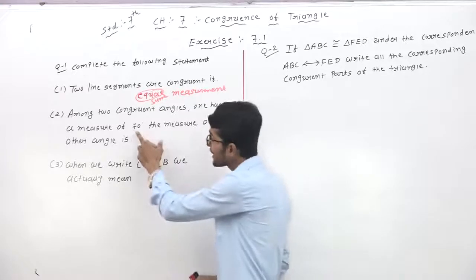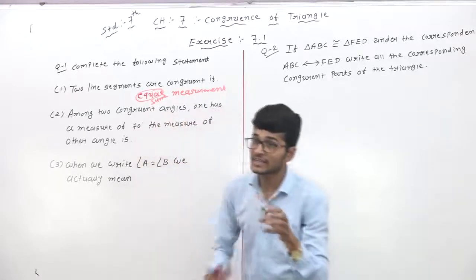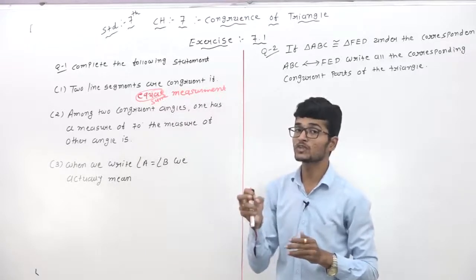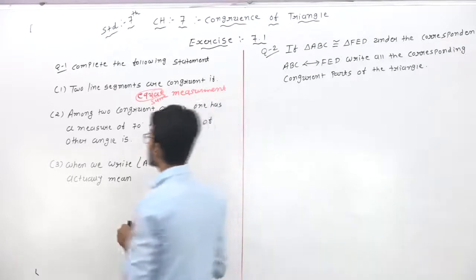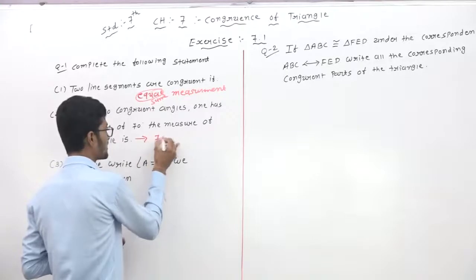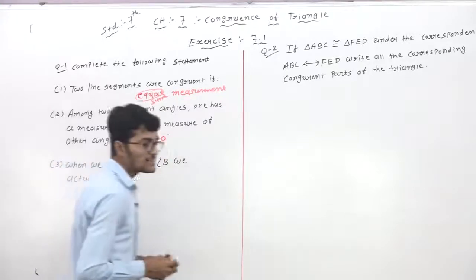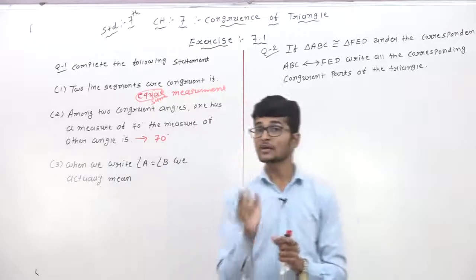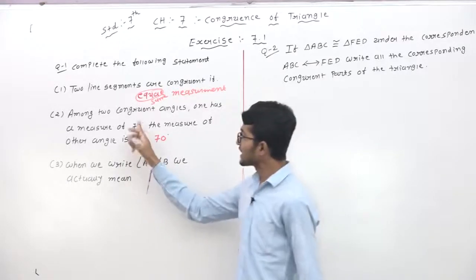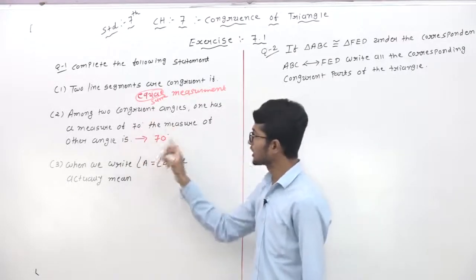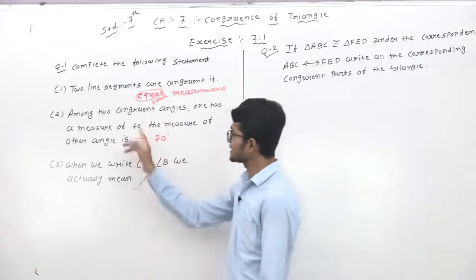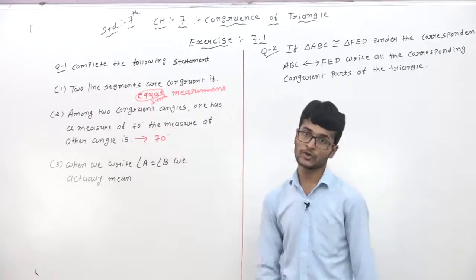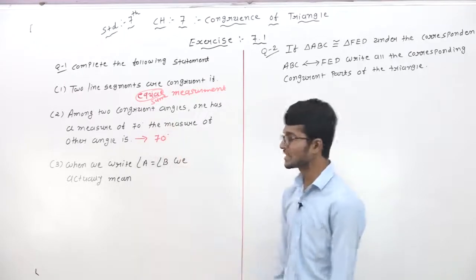Here one angle's measurement is given as 70 degrees. Then the second angle's measurement is also 70 degrees. So the answer is 70. If two angles have the same measurement, then and then these two angles are congruent. So one angle equals 70, then the other angle is also 70 — equal measurement angles, concurrent angles.